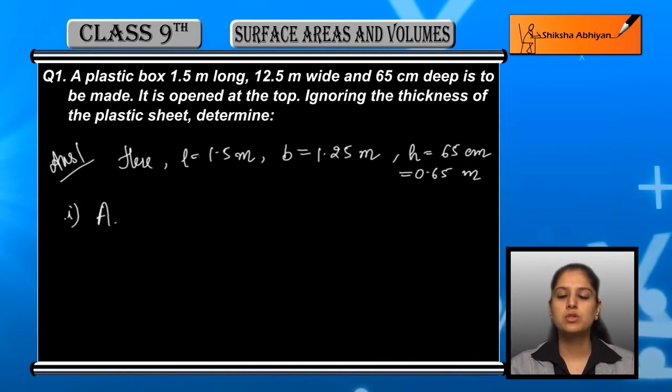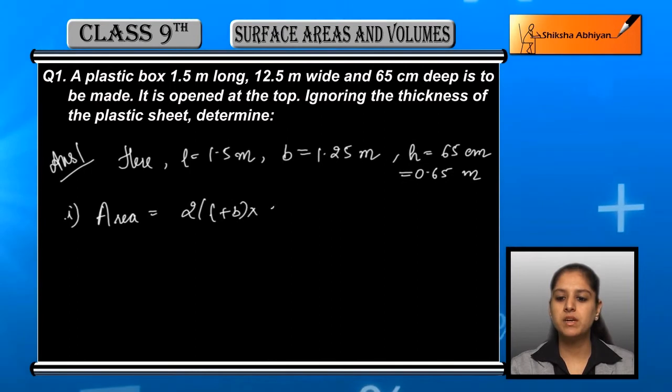Area equals 2(l + b) × h - that means area of 4 walls - plus lb which is base area.